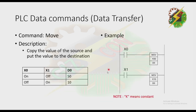Let's have our example. As you can see, if X0 is energized, this value will be moved to D0 — the K here means constant. And if X1 is energized, 10 will be moved to D0.